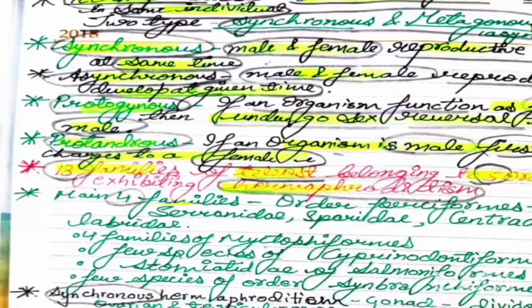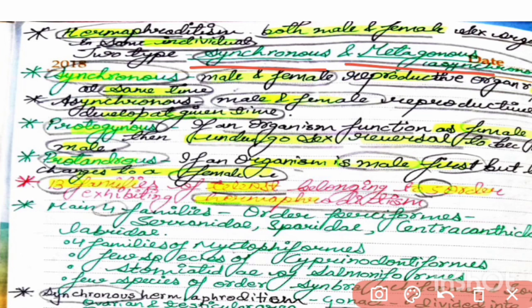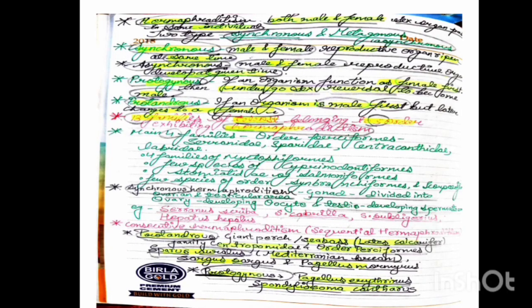In synchronous hermaphroditism, both male and female sex organs are present in the same individual. It is of two types: synchronous and asynchronous. In synchronous hermaphroditism, male and female reproductive organs ripen at the same time. In asynchronous hermaphroditism, either male or female organs develop at a given time — not both together. In synchronous, both ovary and testes develop simultaneously.